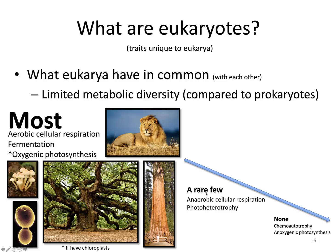There are very, very few rare eukaryotes that can do anaerobic cellular respiration and photoheterotrophy, but these are extremely rare and usually just supplement aerobic cellular respiration. They don't do these independently. There are no known examples of eukaryotes that can do chemoautotrophy or anoxygenic photosynthesis, so eukaryotes are relatively limited in their metabolic diversity.